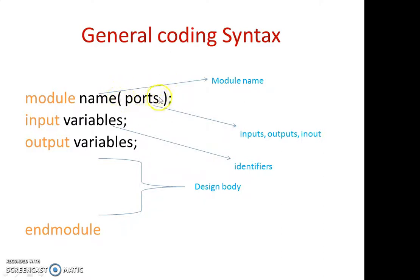Inside the parentheses, you need to define the ports. For example, let's consider a simple basic gate like an AND or an OR. If you see that gate, we have two inputs and one output. In these ports, we can specify the variables we are going to use for inputs and outputs. We are not going to write whether it is an input or output here; those things can also be done inside the port itself, and that type of styling is called NCC. But let us not go to that level — let us write it separately.